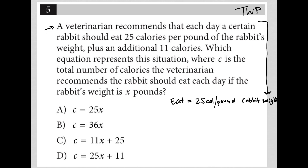Plus an additional 11 calories, right? So plus 11 calories. Which equation represents this situation where c is the total number of calories? So eating represents total, right? So c, that's the total amount that the rabbit should be eating. Where c is the total number of calories the veterinarian recommends the rabbit should eat each day if the rabbit's weight is x pounds.